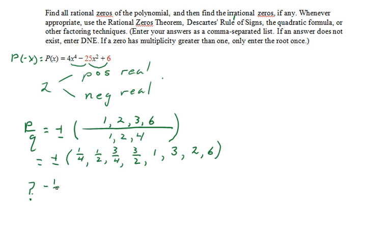So negative 1/2 and positive 1/2. Now we have to be careful here because we have some missing zeros. Our coefficients will be 4, 0, -25, 0, and 6 because the x and x^3 terms were missing.